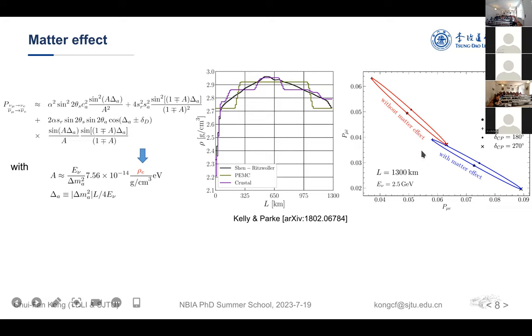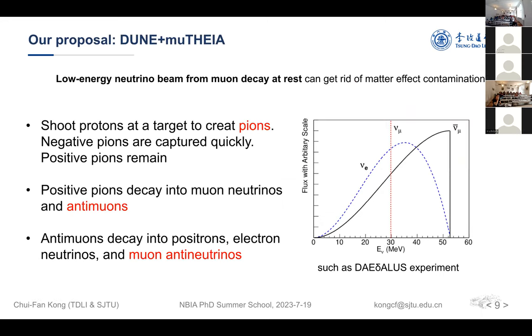For this matter density, we can extract from several earth models like PREM earth model and we can get information for this density. Actually the matter effect cannot be ignored and it can also affect the CP measurement. We can see the right plot here. I show two different cases. One is without matter effect, shown in the red contour, and another one is with matter effect and shown in the blue contour. This is oscillation probability values. We can see that the matter effect can have a very similar behavior as the different CP values at the oscillation probability level.